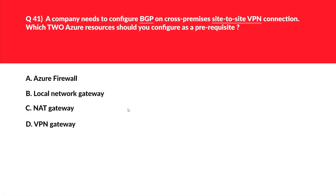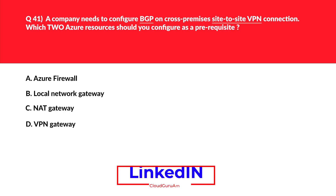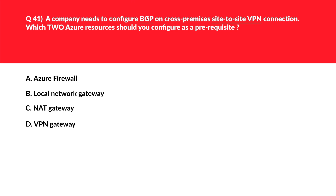This question is about site-to-site VPN. Let's look at option A, that is Azure Firewall. Firewall can help protect against malicious activities like cross-site scripting, but firewall has nothing to do with configuration of BGP as required here in the question. Hence this is an incorrect choice.